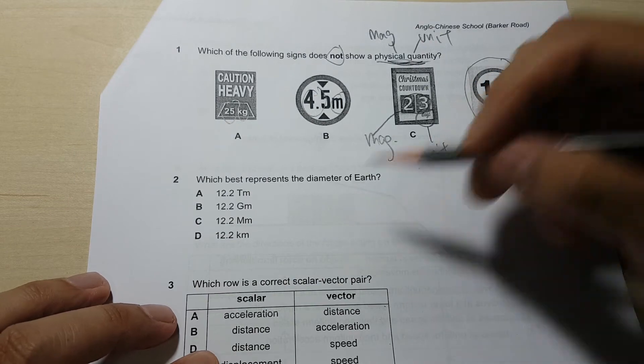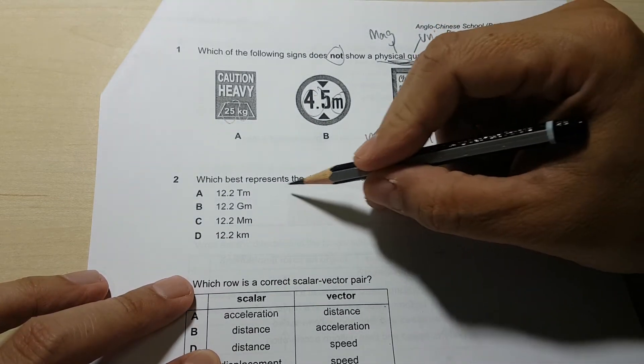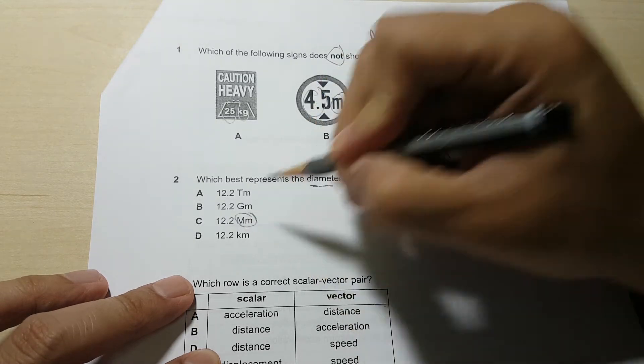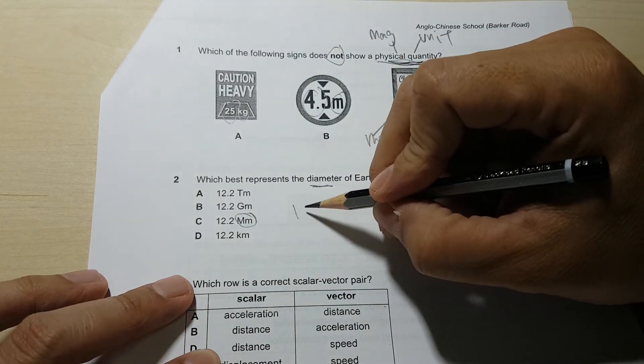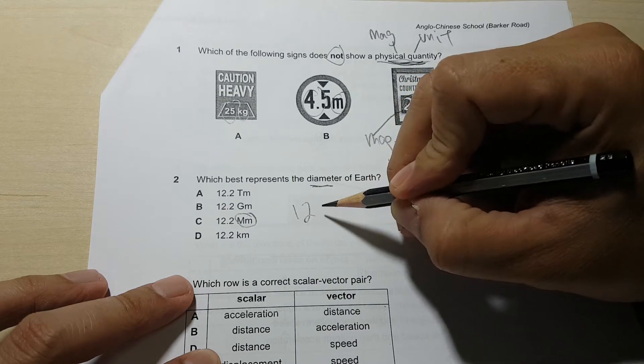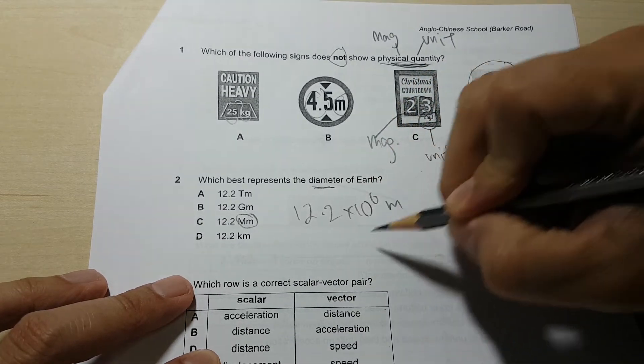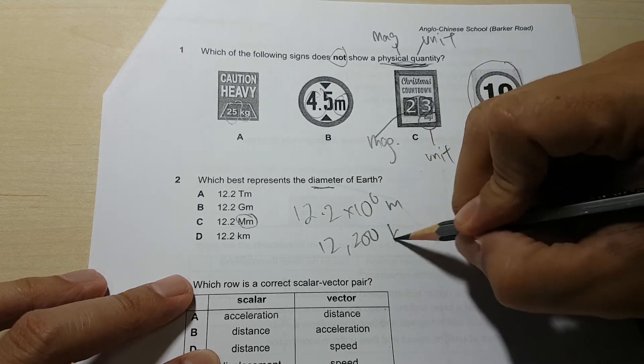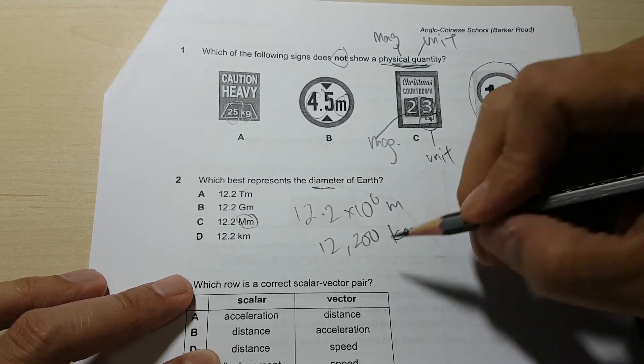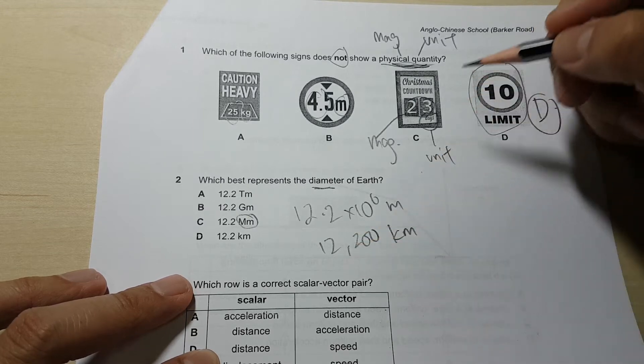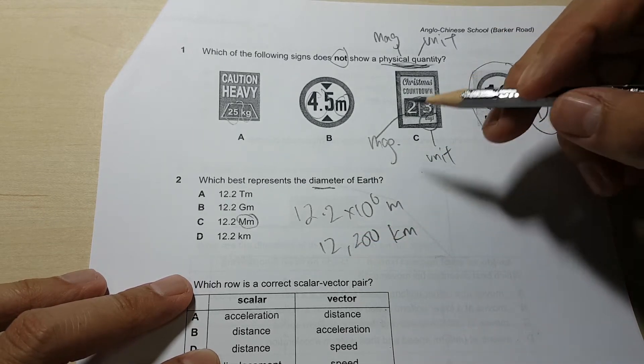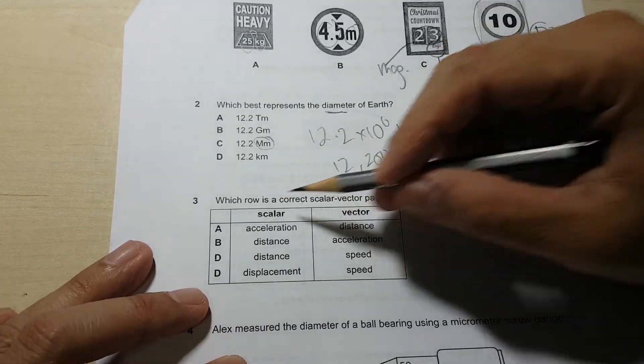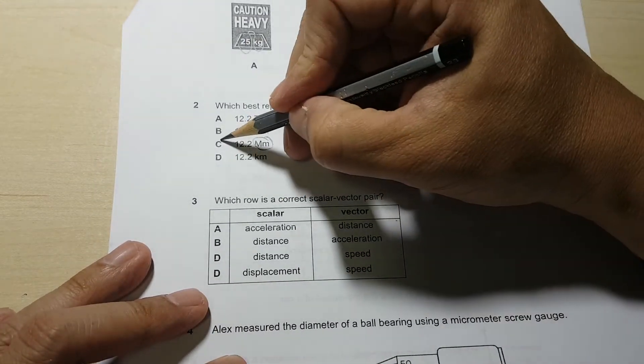Question 2, also not very well done - which one best represents diameter of the earth. It's actually megameters, because the diameter will probably be 12.2 times 10 to the power of 6 meters, which is 12,200 kilometers. So it makes more sense to be in thousands of kilometers rather than to be in the millions of kilometers. So the answer is C.